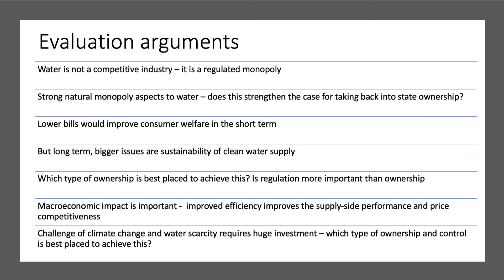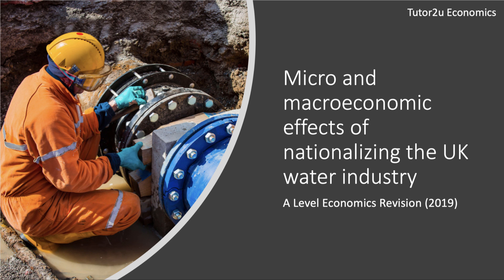Macroeconomics is important here: if you have a water industry that's performing well — efficient, low prices, low cost — that's almost like an improvement in the supply-side performance of the economy and helps the price competitiveness of businesses that use lots of water. Fundamentally, the challenge of climate change and water scarcity requires tens of billions of pounds of investment in the water sector over the next 5, 10, 15 years. Which type of ownership and control is best placed to achieve this — public versus private sector? Ultimately you have to come to a value judgment based on your economic perspective: who should pay for the water we consume, and who should provide it?